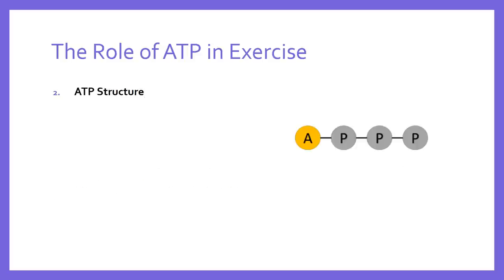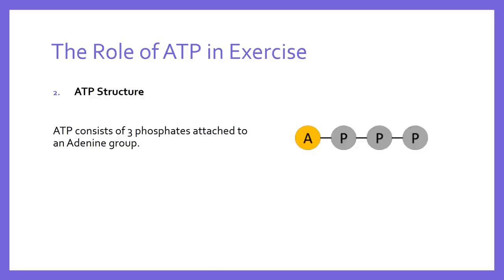In terms of its structure, ATP, as the name suggests, consists of three phosphates — hence triphosphate — attached to an adenine group. You'll see on the picture on the screen a simplified version of the structure of ATP. The lines between the letters represent chemical bonds, and those chemical bonds are essentially where energy is stored. These chemical bonds hold the molecule together to form ATP: a single adenine group with three phosphates attached by chemical bonds.